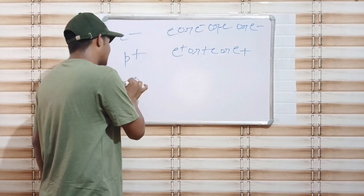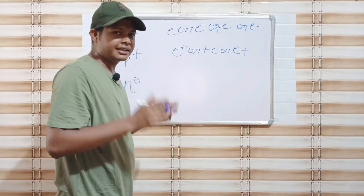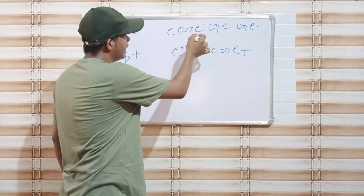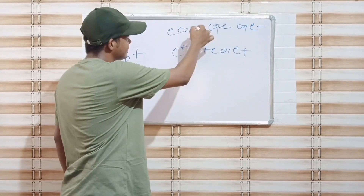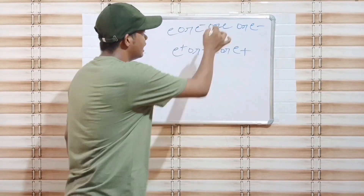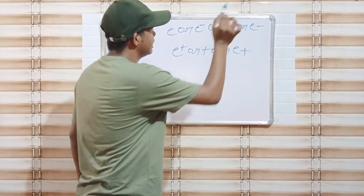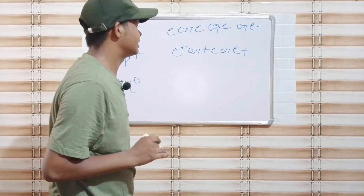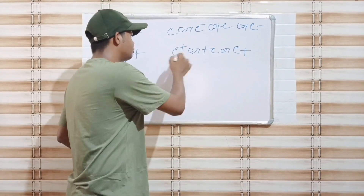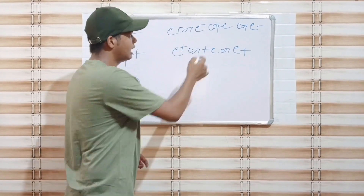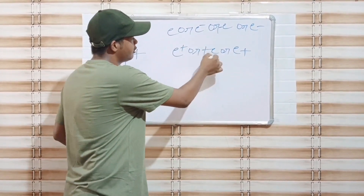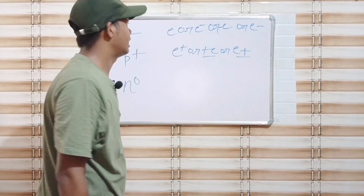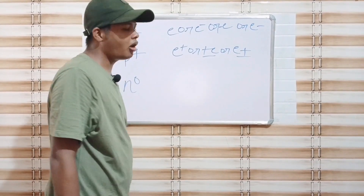Electron per maujood charge ko e negative se darshaya jata hai. Proton per maujood charge ko e positive se darshaya jata hai. The symbol for the charge on an electron is shown as e negative, and for a proton as e positive.